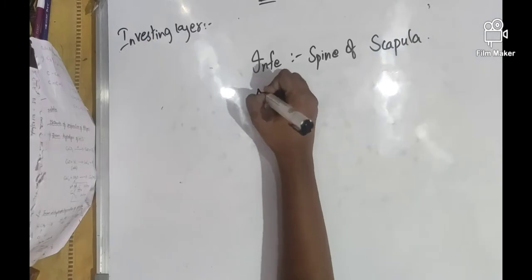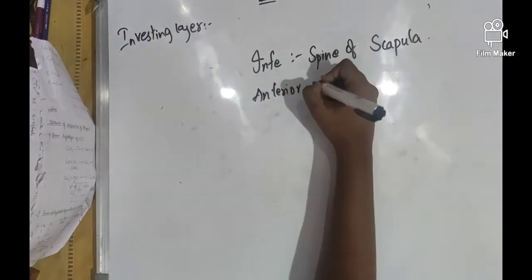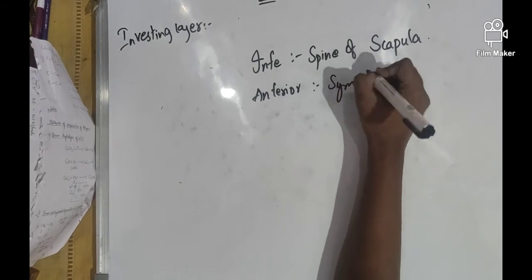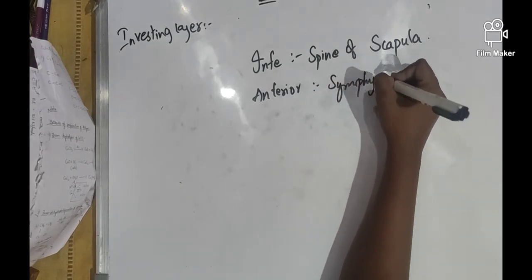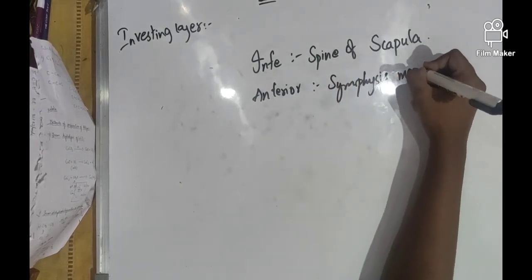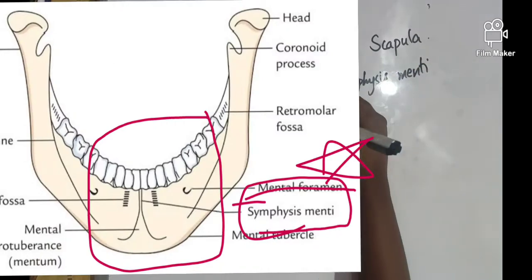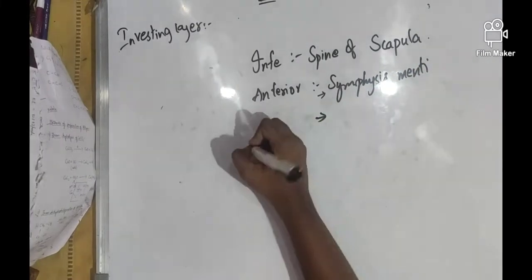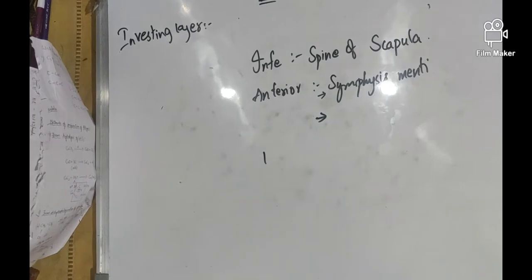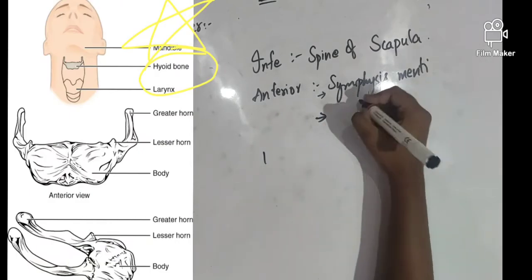Anteriorly, we can see symphysis menti and hyoid bone.